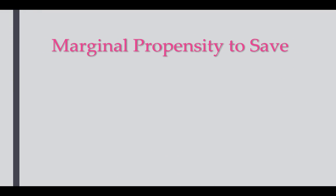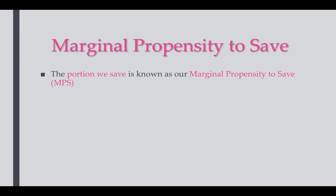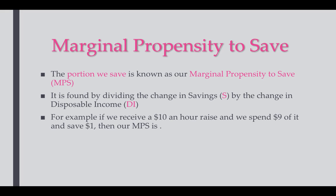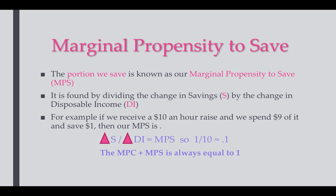The marginal propensity to save works much the same way, just with savings instead of spending. Whatever we don't spend becomes our savings, and this is the MPS. We take the change in savings divided by the change in disposable income. So if we get $10 and save $1, the MPS is 1 over 10, which is 0.1. MPC was 0.9 and MPS is 0.1 — together they equal 1. Always, MPC plus MPS equals 1.